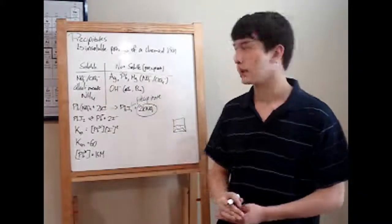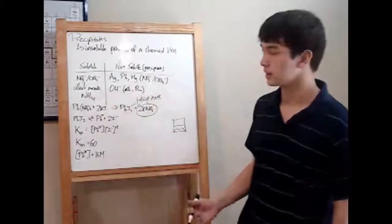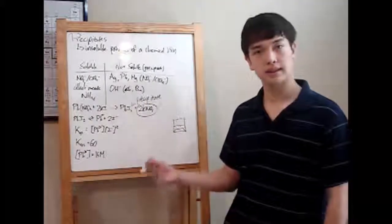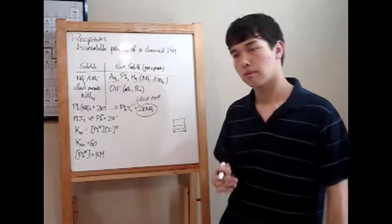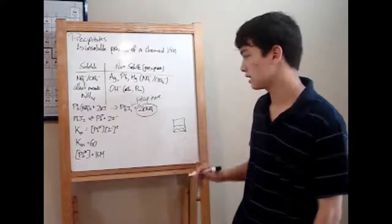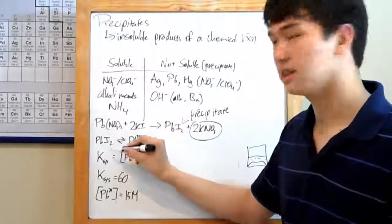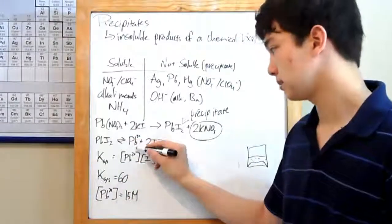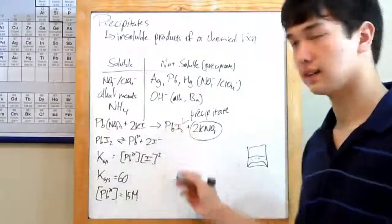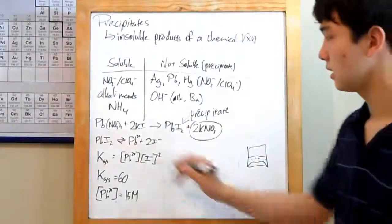Now, whenever you do get a precipitate, you might be asked to write out an equilibrium for it. See, all precipitates, although they're considered insoluble, tend to dissolve in small micro amounts, just a few ions at a time. And so all you have to do is take the precipitate down, PbI2, and break it up into its ions. There's lead, and so that's Pb2+, and iodine. There are two iodines in this, so two I- ions. And that's your equilibrium.